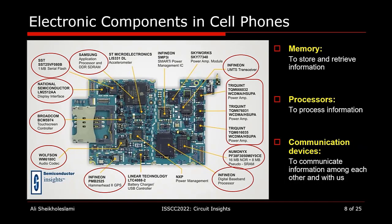If you want to categorize all components within a cell phone, the vast majority of them fall into one of three categories: memories — devices we use to store and retrieve information; processors — devices to process information; and communication devices — allowing communication to us and to other electronics. It is interesting that this same category of devices exists in almost all electronic applications, although with different proportions.